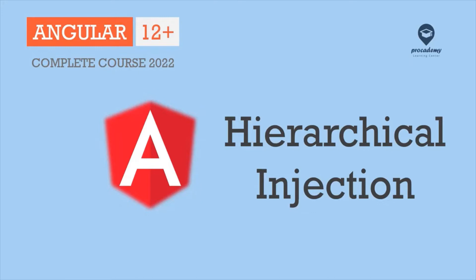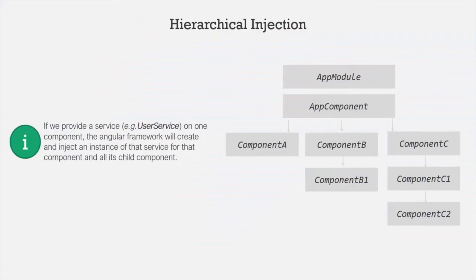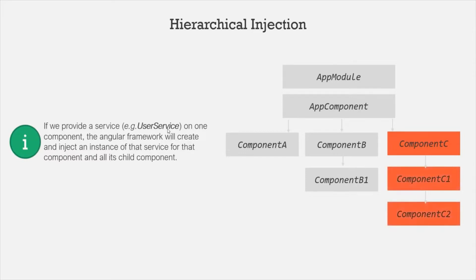Angular's dependency injector is a hierarchical injector. That means if we provide a service at some place in our app — let's say on a component C — the Angular framework will create and inject an instance of that user service for this component C and all its child components and their child components as well.